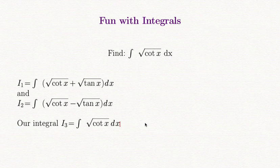So if we stare at i1, i2 and i3 then it's pretty apparent that i3 is the arithmetic mean of i1 and i2. Basically what happens is if you add up i1 and i2 then the plus square root tan x and the minus square root tan x essentially cancel out.